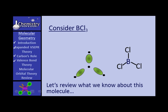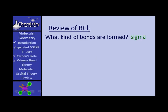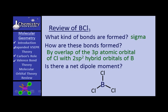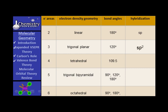Let's review what we know about BCl3. The bonds formed are sigma bonds, formed by overlap of the 3P atomic orbital of chlorine with the SP2 hybrid orbitals of boron — there are three of those SP2 hybrid orbitals. Does the molecule have a net dipole moment? The electrons are pulled in all directions and they counteract each other, so the answer is no. The hybridization is SP2.